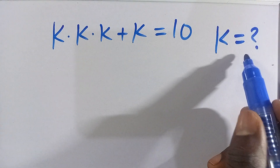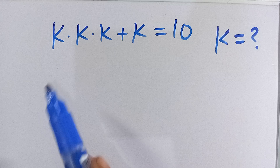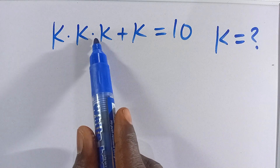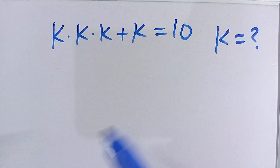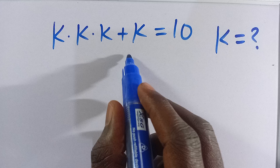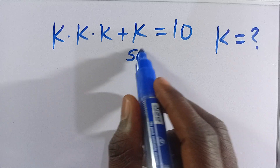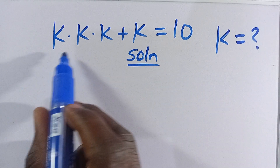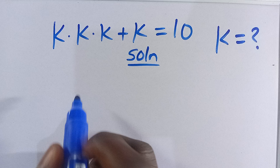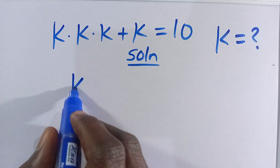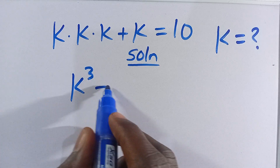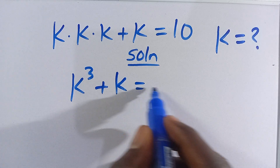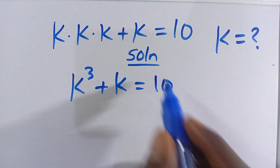Hi, what is the value of k given that k times k times k plus k equals 10? Let's find the solution. From here, k times k times k gives us k to the power of 3, plus k equals 10.